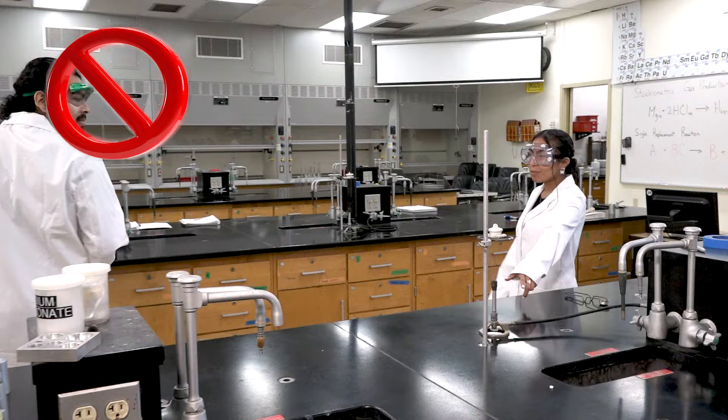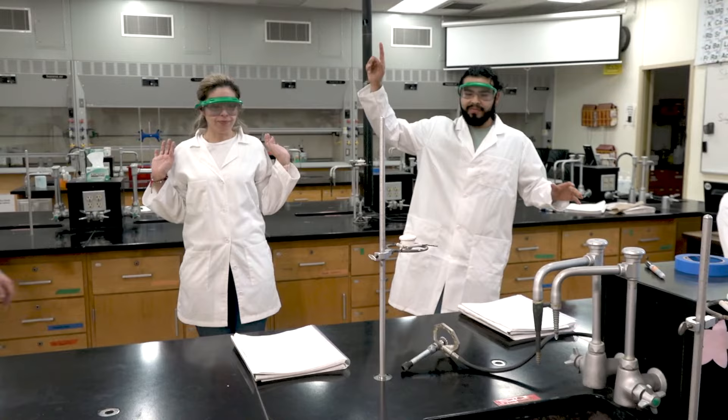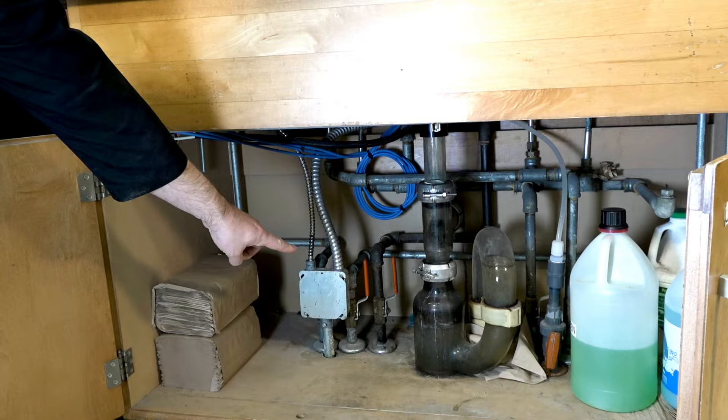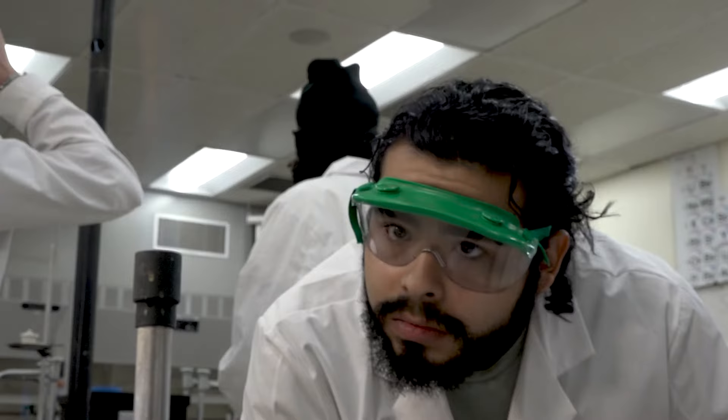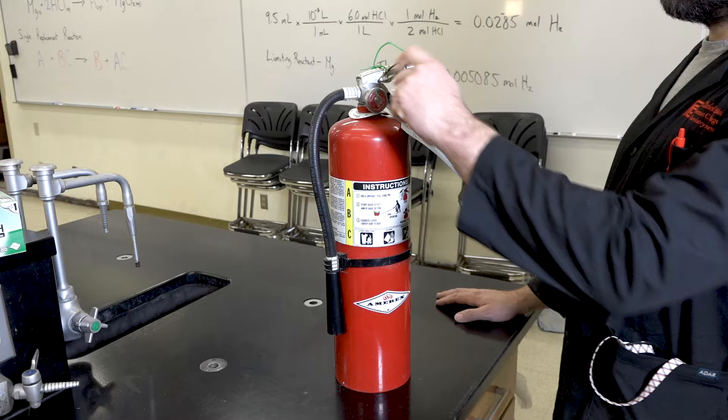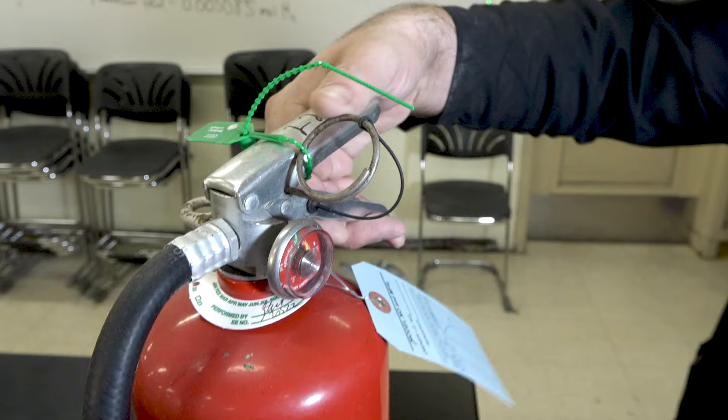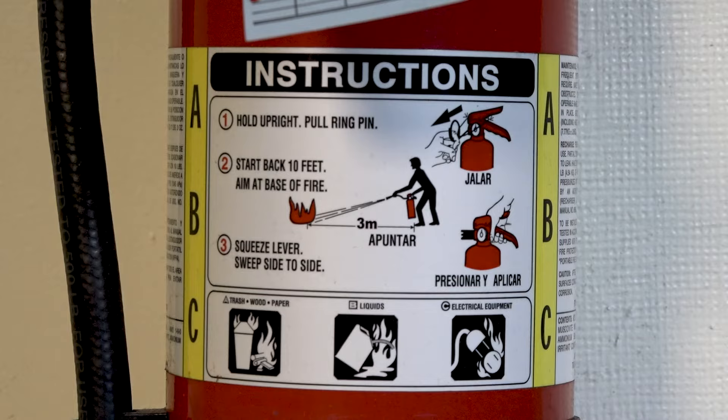If an accident with your Bunsen burner does occur, for example gets knocked over onto its side, the first step is to always make sure to get yourself out of harm's way. Then, if possible, turn off the gas source to the burner to extinguish the flame. In case of emergency, there is a main gas shutoff valve located under the sink at the end of each bench. In case of a serious fire accident, it might be necessary to employ the fire extinguisher. To operate a fire extinguisher, pull the pin from the handle, point the nozzle towards the base of the fire, and squeeze the trigger. The dry chemical foam inside the fire extinguisher does cause a bit of a mess, but will safely extinguish the fire.